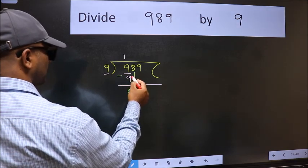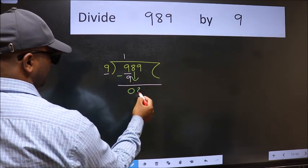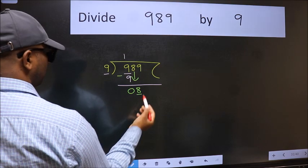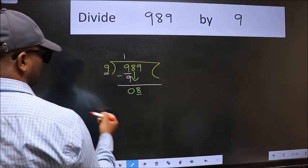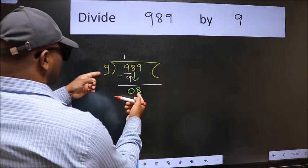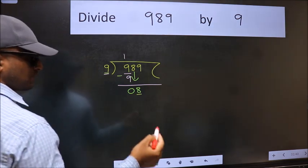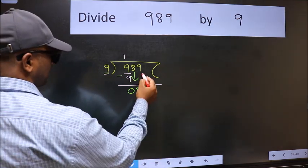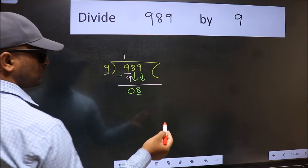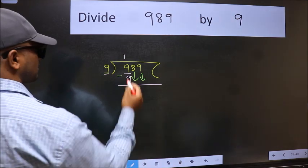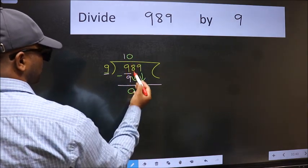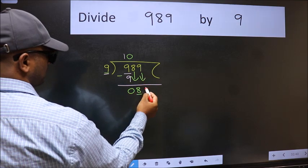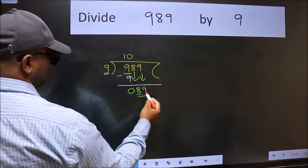After this, bring down the beside number. So 8 down. Now here we have 8 and here 9. 8 is smaller than 9. So we should bring down the second number. And the rule to bring down the second number is we should put 0 here. Then only we can bring this number down. Now 89.